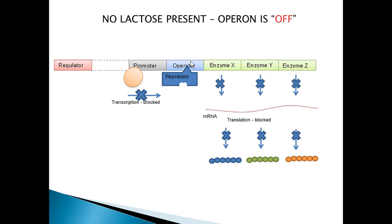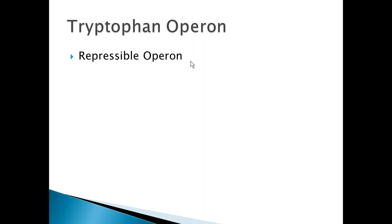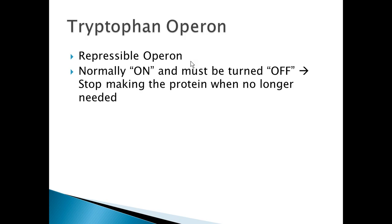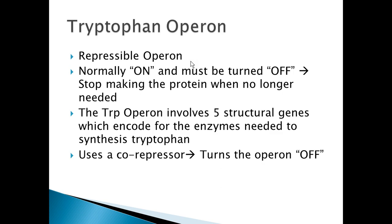Let's look at an example of a repressible operon. The tryptophan operon is a repressible operon. In the tryptophan operon, the operon is normally on and must be turned off when the cell no longer needs to make the particular enzymes or proteins. In the case of the tryptophan operon, there are five structural genes, all encoding for enzymes needed to synthesize tryptophan. In order to turn the tryptophan operon off, a co-repressor is needed. In the case of the tryptophan operon, the co-repressor is tryptophan itself.